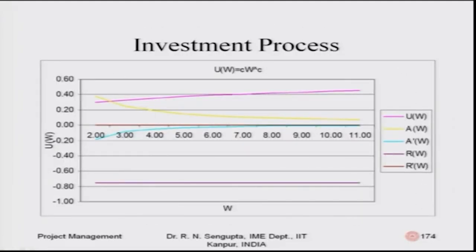Drawing the curves: I have u, a, a prime, r, and r prime plotted. Since r prime was a constant value, it appears as a straight horizontal line in the last curve — as shown where I am hovering my finger. That is the line for r prime.